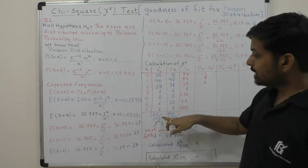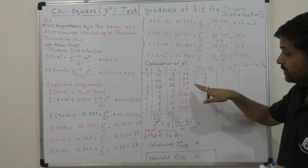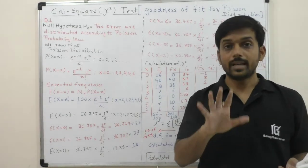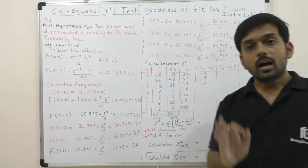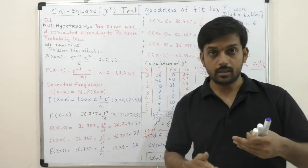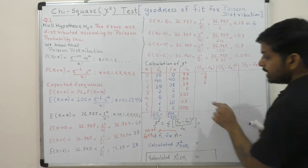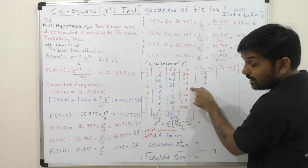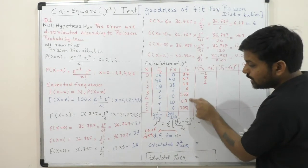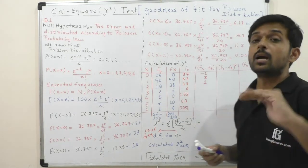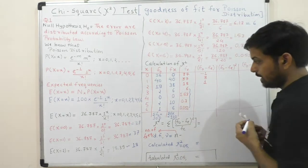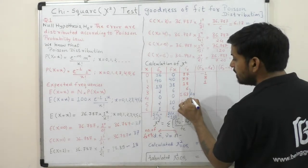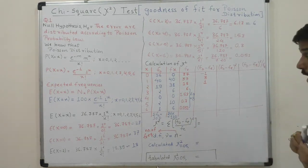Now, a condition of the chi-square test is that no expected frequency should be less than 5. Here, three expected frequencies (1.53, 0.3, 0.055) are less than 5. So we pool these three frequencies by adding them to the previous frequency of 6. When we add these four values, the total is 7.881, which approximates to 8.